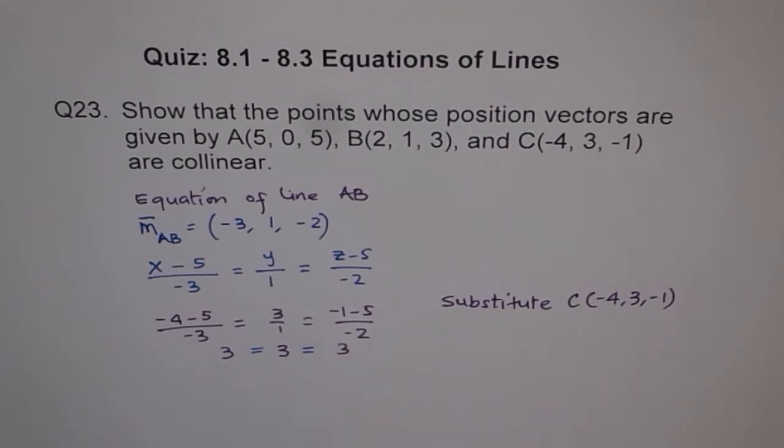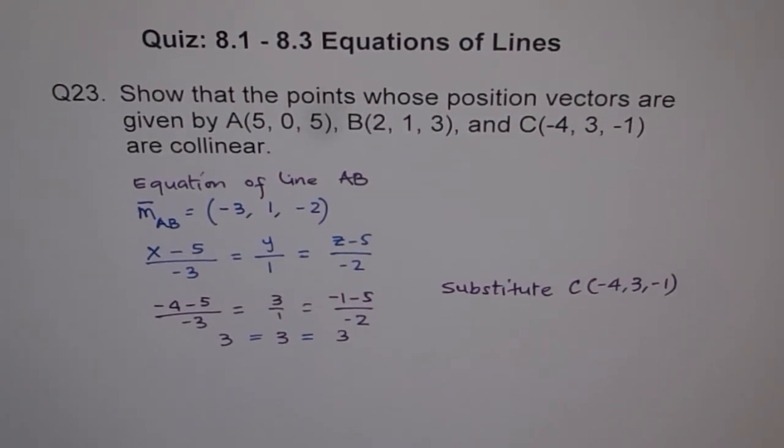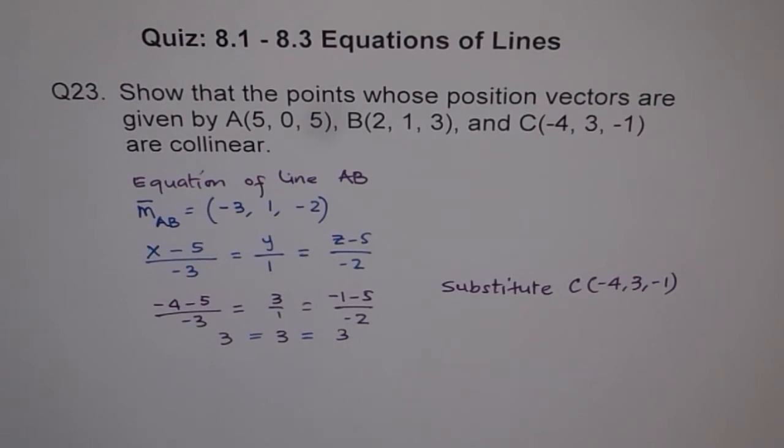All are equal. So this point C lies on line AB. Do you understand? So that is the approach which we follow and that's how beautifully we got our solution. Have a good look at it. Thank you.